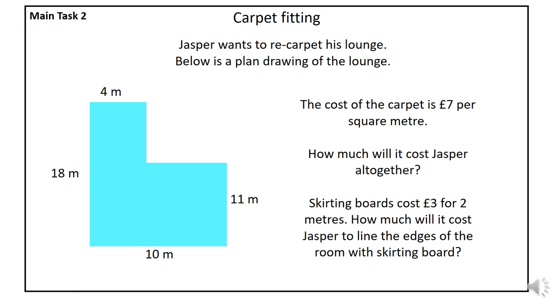And then there's an extra additional question. Skirting boards cost £3 for 2 meters. How much will it cost Jasper to line the edges of the room with skirting boards? So remember the difference between carpet and skirting board. With carpet, obviously, we're using area. With skirting board, I want you guys to think about what it is exactly you're using and obviously what the cost will be for the skirting.